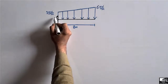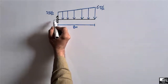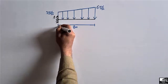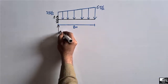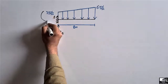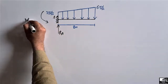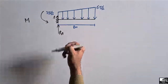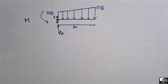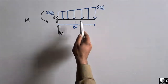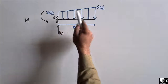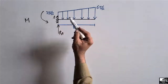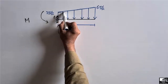We are going to find out the support reactions at support A. This is a fixed support, so it can resist the vertical load RA and it will also take the moment M. In order to find RA and moment for this cantilever beam, first we have to find out the total load acting on this beam. Since this is a trapezoidal load, we have to convert it into a pointed load.